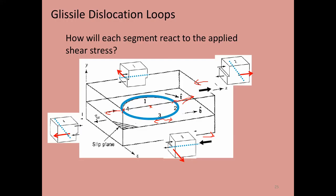That was a pretty detailed example, requiring a good understanding of everything discussed so far. It's really worthwhile to work through each of these segments — one, two, three, four — and make sure you understand why each edge or screw dislocation is oriented the way it is and why it moves in a particular direction in response to macroscopic shear strain. Thank you.